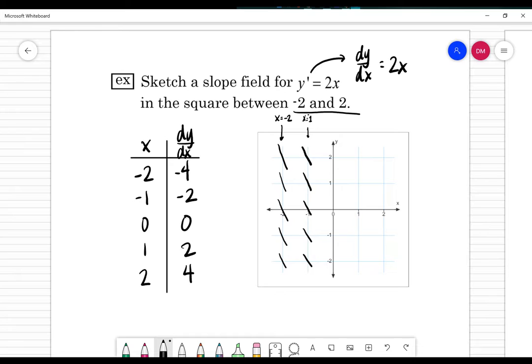Where x is equal to 0, I had a slope of 0, I get a horizontal line. Then I'm going to have the positive slopes over here, so we got a positive 2 and a pretty steep positive 4.